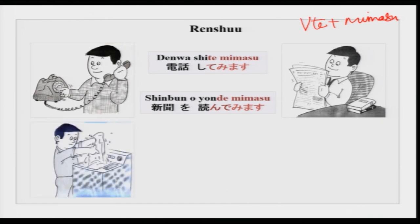Then there is another situation: this gentleman is washing, looking a little flustered, unable to do it. The situation could be that he does not know how to use the washing machine and has put a lot of soap detergent in and it is coming out. So yatte mimasu. His friend says yatte mite kudasai, kantan desu yo, muzukashiku wa arimasen, dozo ikkai yatte mite kudasai — please try it once, it is easy, it is not difficult. And then he says ok, jia, yatte mimasu — and then he is trying to wash clothes.